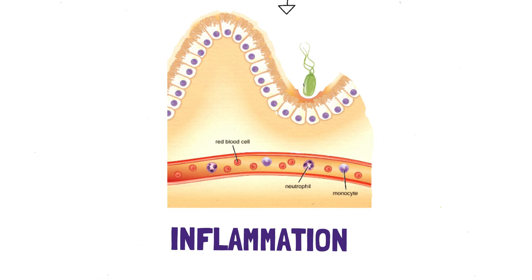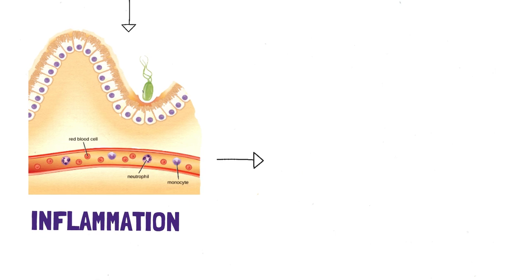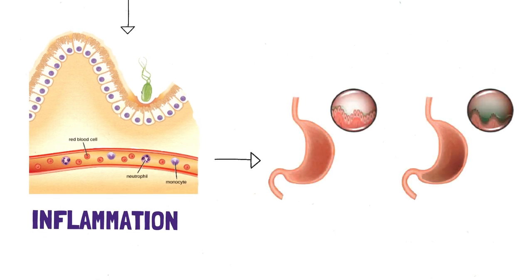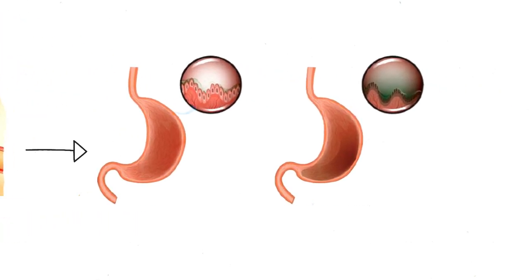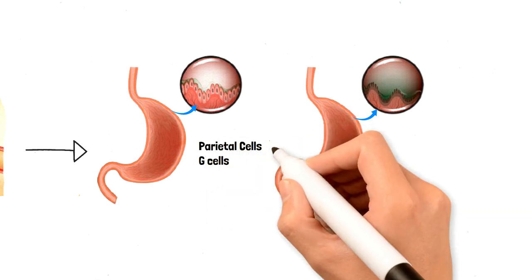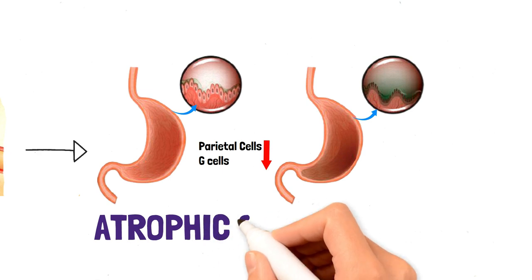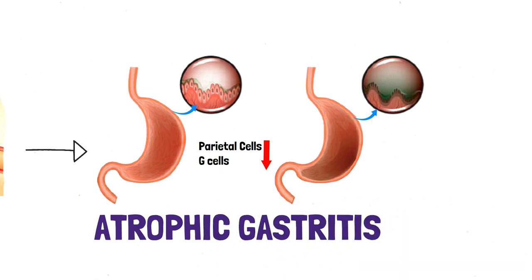Eventually the stomach will get burnt out fighting this infection, and normal acid-secreting glands in the stomach will begin to disappear. This will lead to mucosal atrophy — atrophy means cells shrinking in size. When these cells in these glands start to atrophy, the ability to secrete hormones and acid will also decrease. That's when this condition is called chronic atrophic gastritis.